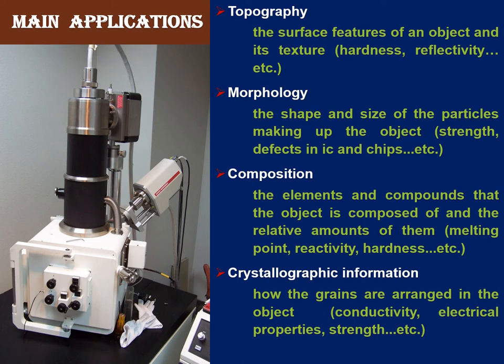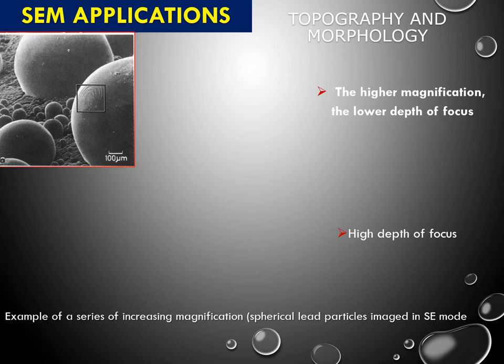We can know the surface morphology and many different applications by SEM. The applications include: topography — surface features of an object and texture; morphology — shape and size of the particle; composition — which elements are present and quantitatively how much composition is there; and finally, crystallography — how the grains are arranged in the object, their organization or dispersion.